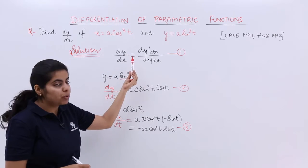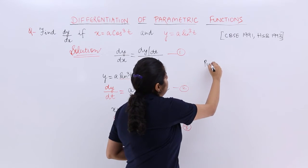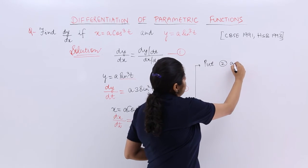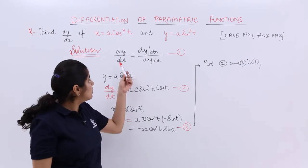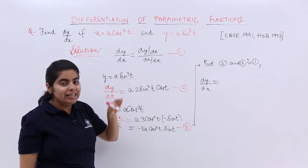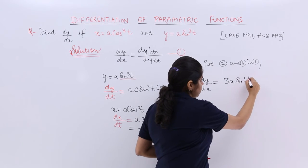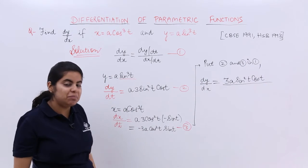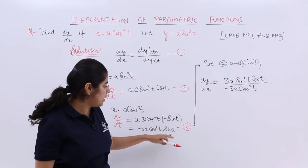Finally, you have to put these values 2 and 3 in 1 in order to get dy/dx. So let me write it down as put equation 2 and 3 in equation number 1. So what is my dy/dx? In short, my dy/dx becomes dy/dt, which is 3a sin squared t cos t, upon dx/dt, which is minus 3a cos squared t sin t.